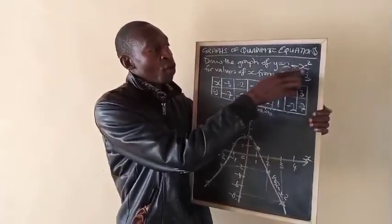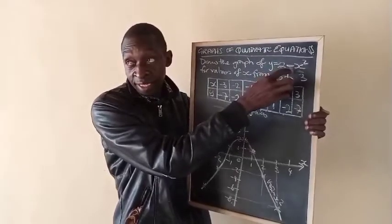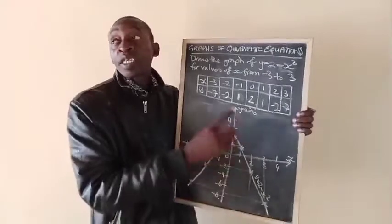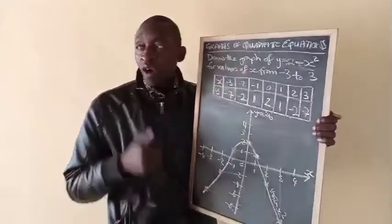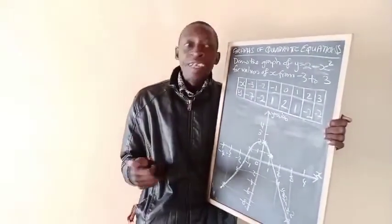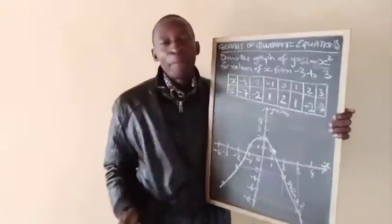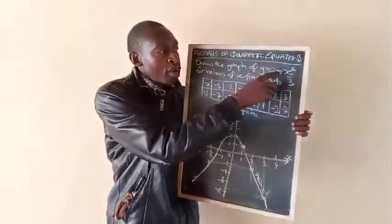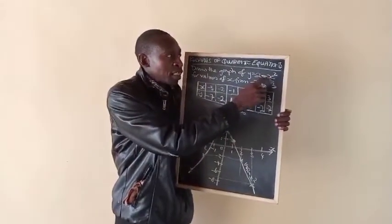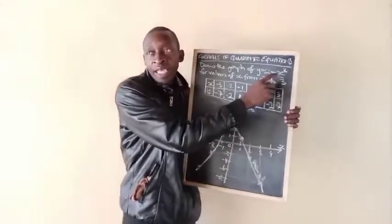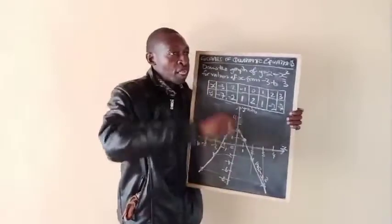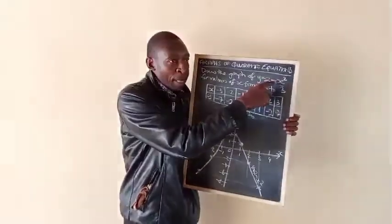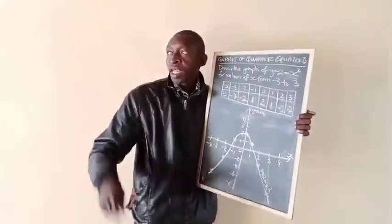When the quadratic component has a minus sign, the graph will form a cap. When the quadratic component has a plus, the graph will form a cup. That's what you should do.